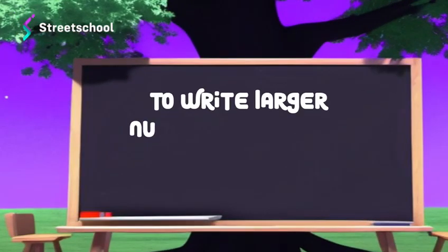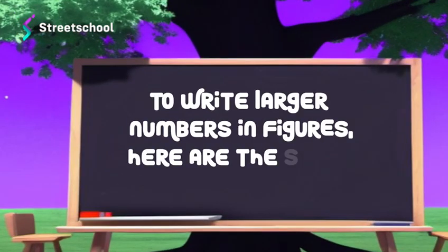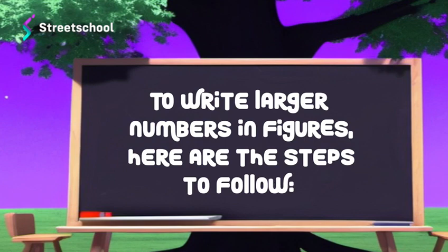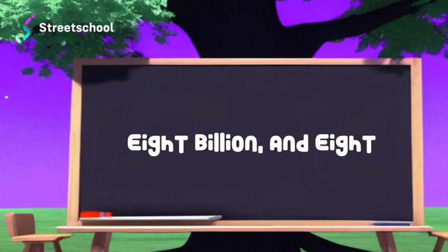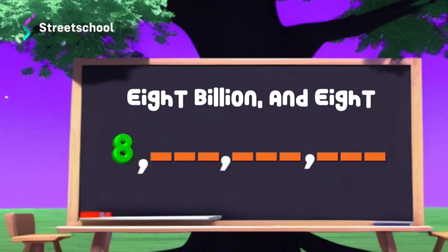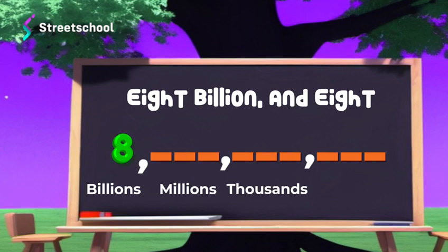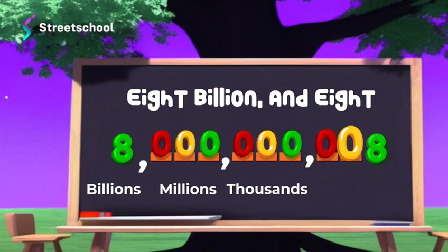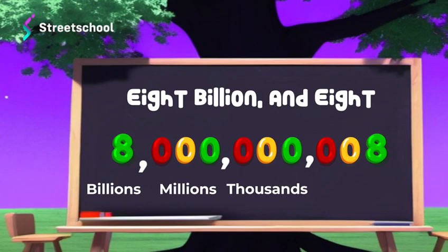To write larger numbers in figures, here are the steps to follow. List the large groups in order until you get to the final group. Place the number names in the correct group. Replace the number names in each group with their value in figures. Each group after the first must have three digits. Place a zero in any empty position.